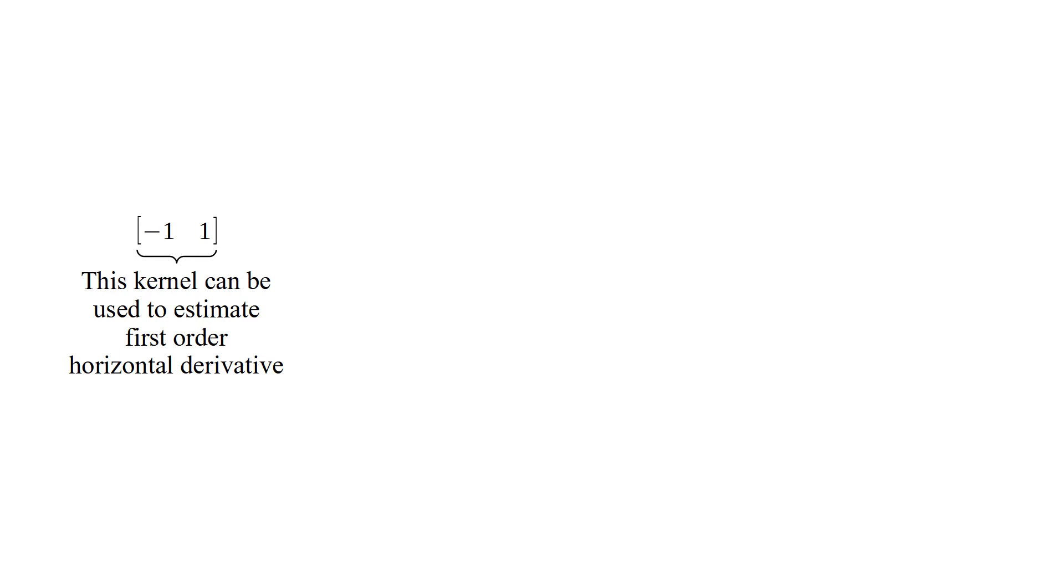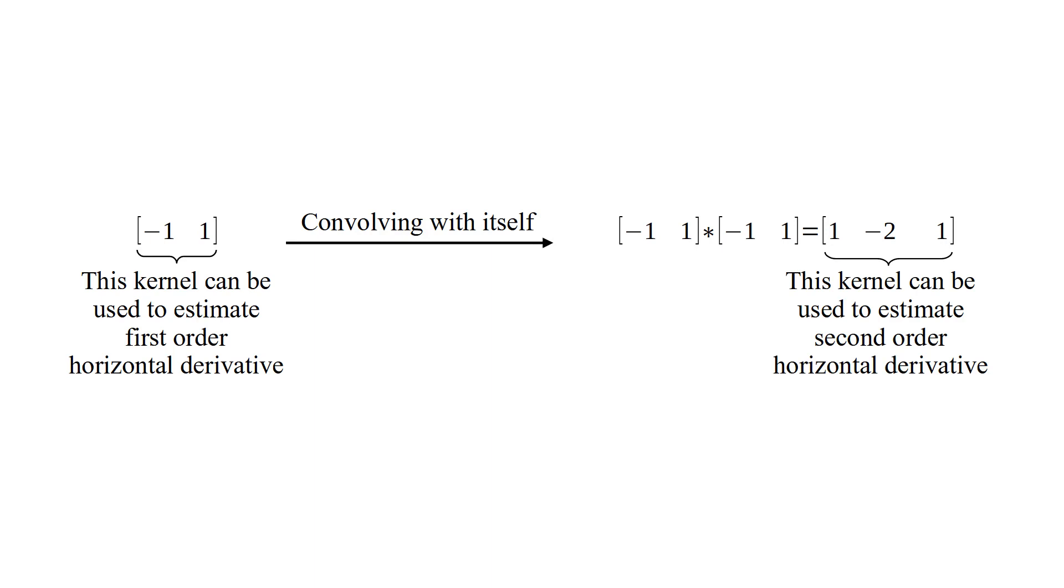This 1 by 2 kernel can be used to estimate first-order horizontal derivative. If we convolve it with itself, we get this kernel. And this kernel can be used to estimate second-order horizontal derivative. Left one is used to estimate first-order and the right one is used to estimate second-order derivative.